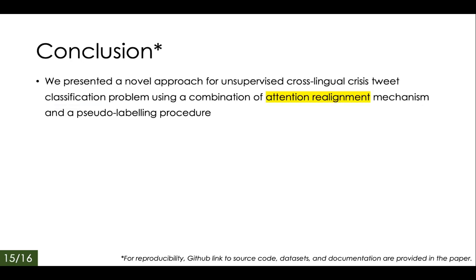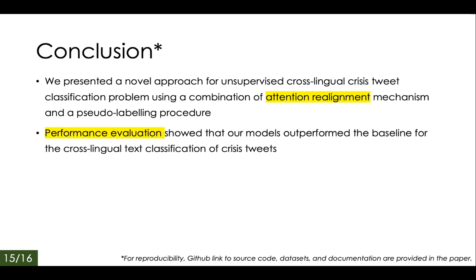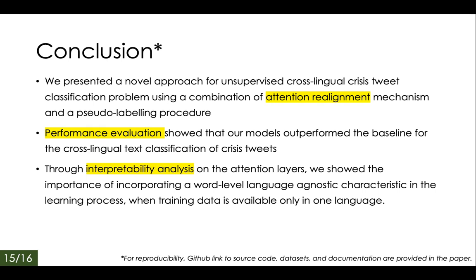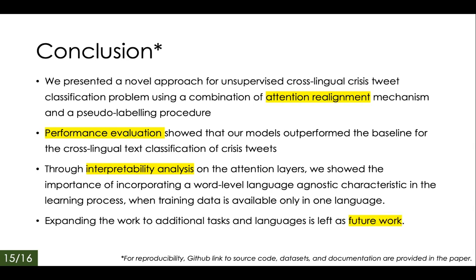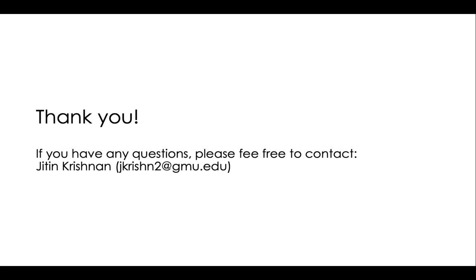To summarize, we present a novel approach for unsupervised cross-lingual crisis tweet classification using a combination of attention realignment mechanism and pseudo-labeling procedure. Performance evaluation showed that our model outperformed the baselines. We also presented an interpretability analysis comparing attention layers, showing the importance of word-level language-agnostic characteristics in the learning process, particularly useful when training data is available only in one language. We hope to expand our work to additional tasks, datasets, and more languages. For reproducibility, the GitHub link to source code, datasets, and documentation is provided in the paper. Thank you and have a great day.